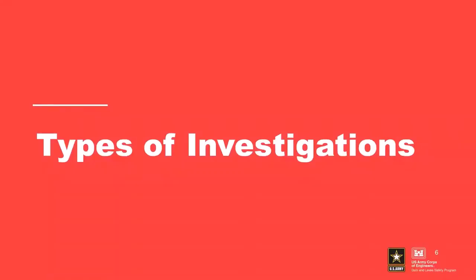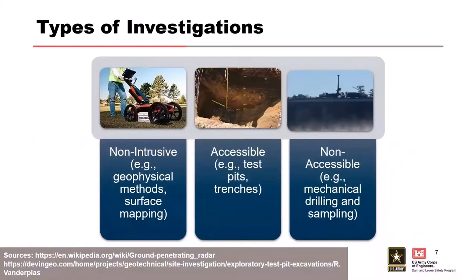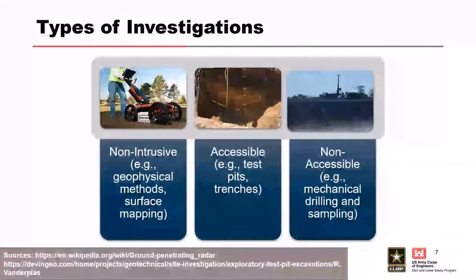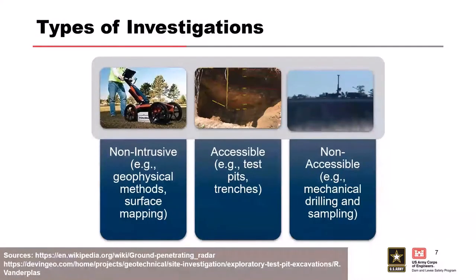Going back to what we talked about in part one, types of investigations can be employed from preliminary investigations all the way through construction. The three major types are: non-intrusive — that's our geophysics and surface mapping; accessible — that's accessible to a human, so test pits and trenches; and non-accessible mechanical drilling and sampling. Don't think you don't have to do NEPA or cultural compliance activities because you're doing a non-intrusive method — especially in certain states, environmental and cultural compliance is still required.